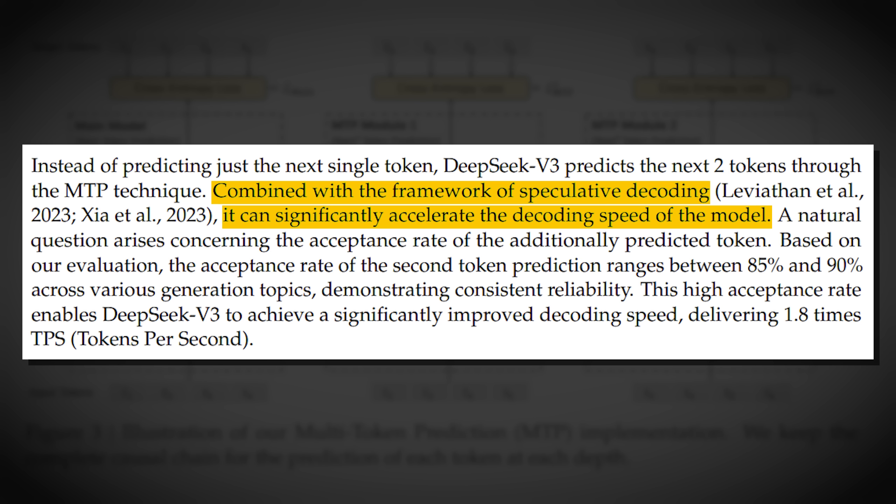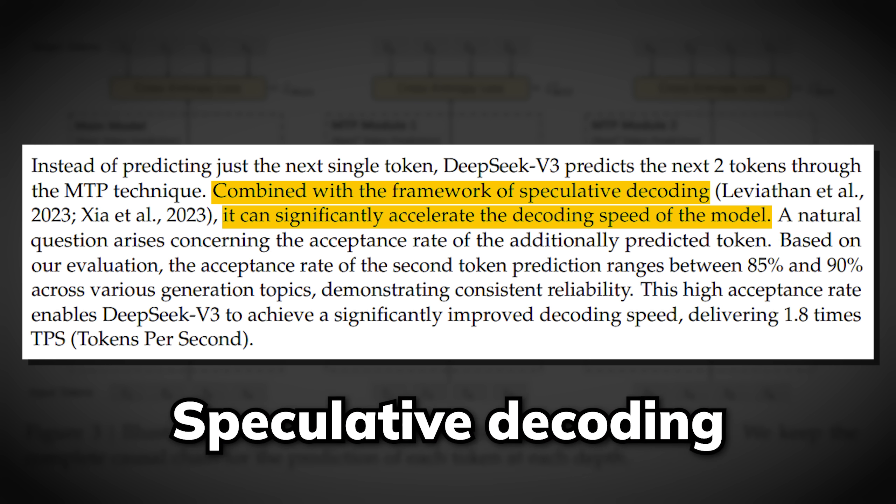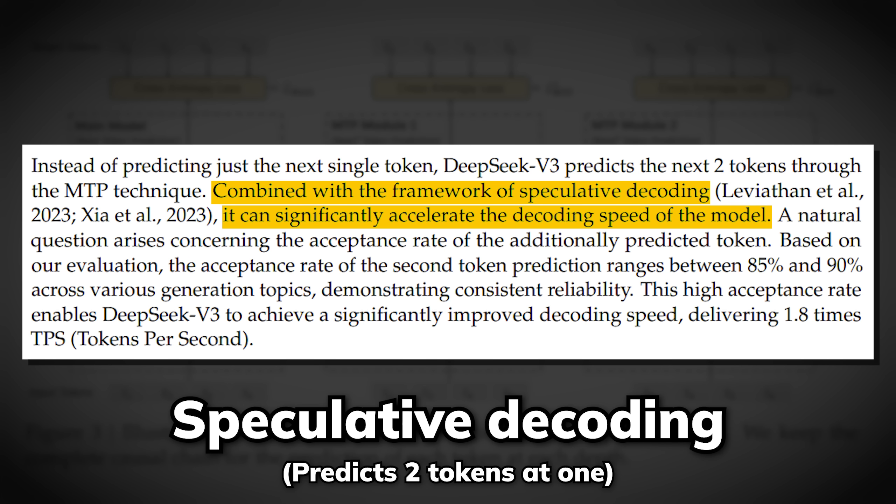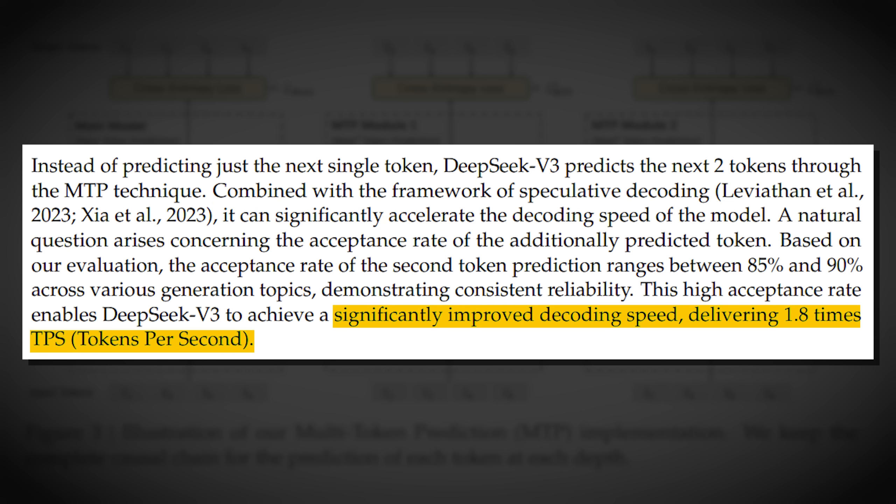But the cherry on top is, they also found that by keeping the one MTP module during inference and use it for speculative decoding, which basically means the model is predicting two tokens at once, it could achieve a 1.8 times speed up in tokens per second. And on top of that, the second token prediction was highly accurate, sitting at an 85 to 90% acceptance rate.